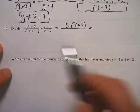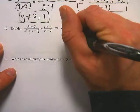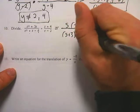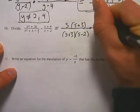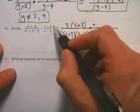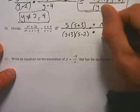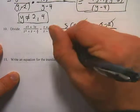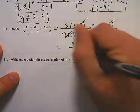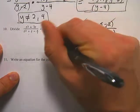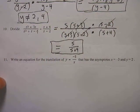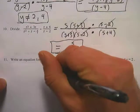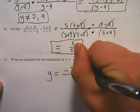Number 10 is the last division problem. I factor the top of the first fraction to get s times s plus 3, and the bottom factors as s plus 3 times s minus 2 — two numbers that multiply to negative 6 and add to positive 1. Since I'm flipping and multiplying, I put them on the same fraction right away with s minus 2 on top and s plus 4 on the bottom. The s plus 3s cancel and the s minus 2s cancel, leaving s over s plus 4 as the answer.